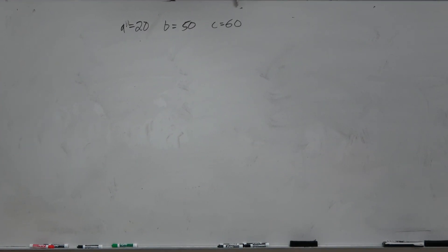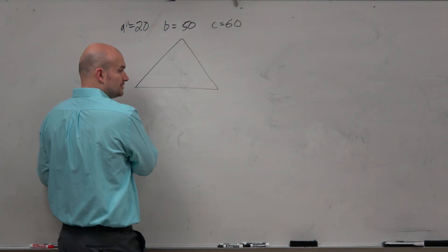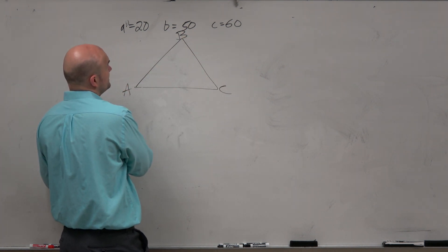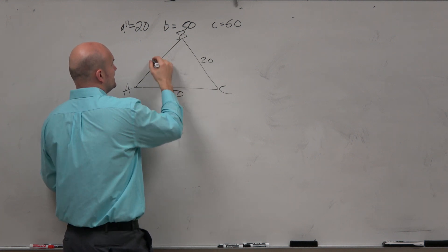So in this problem, we have a triangle with side length A, side length B, side length C. I'm going to draw a nice little triangle here, a nice little McLogan triangle. We'll go A, B, and C: 20, 50, and 60.